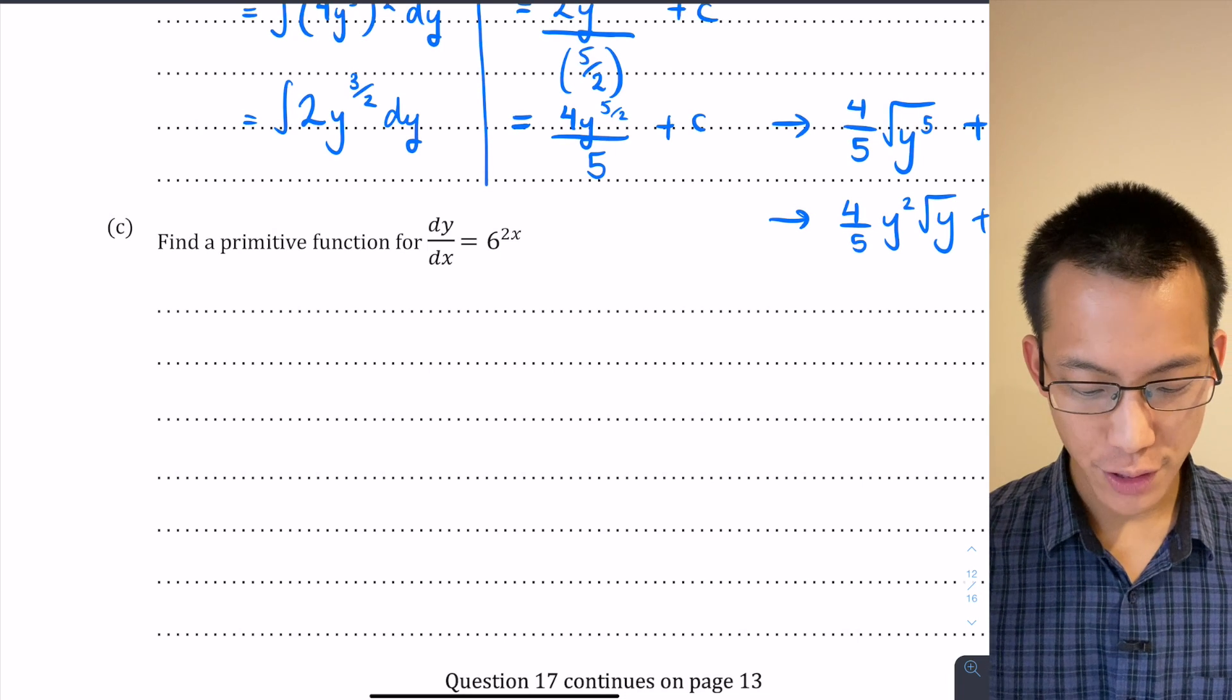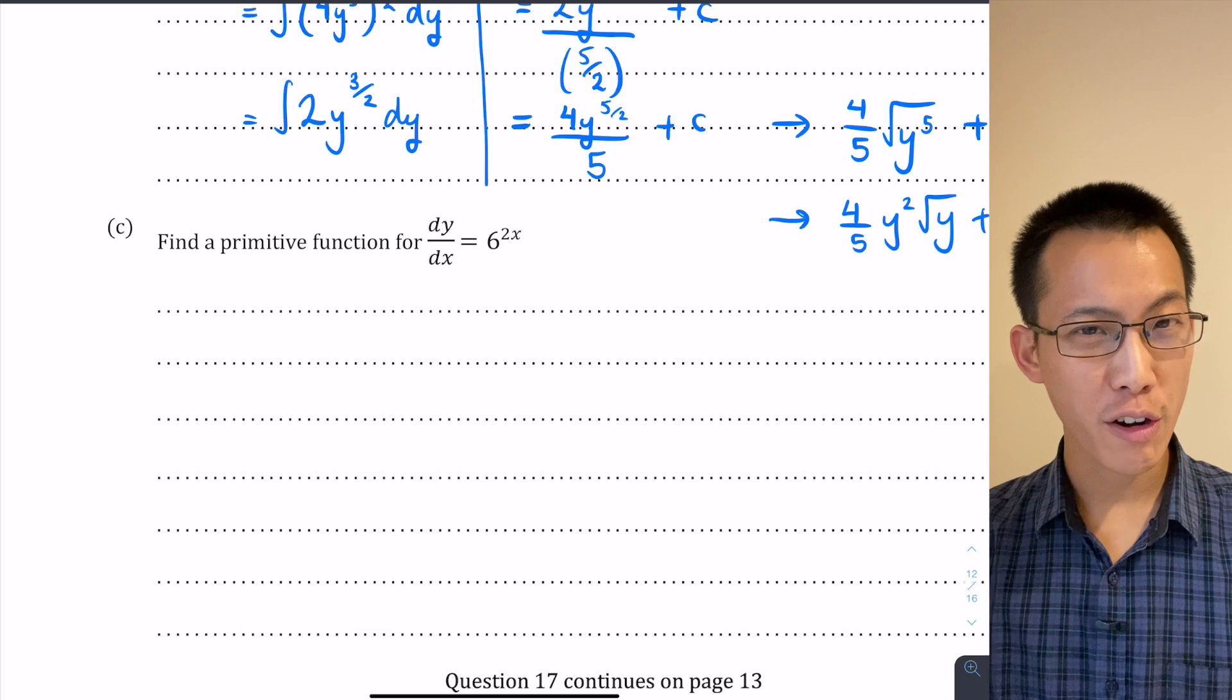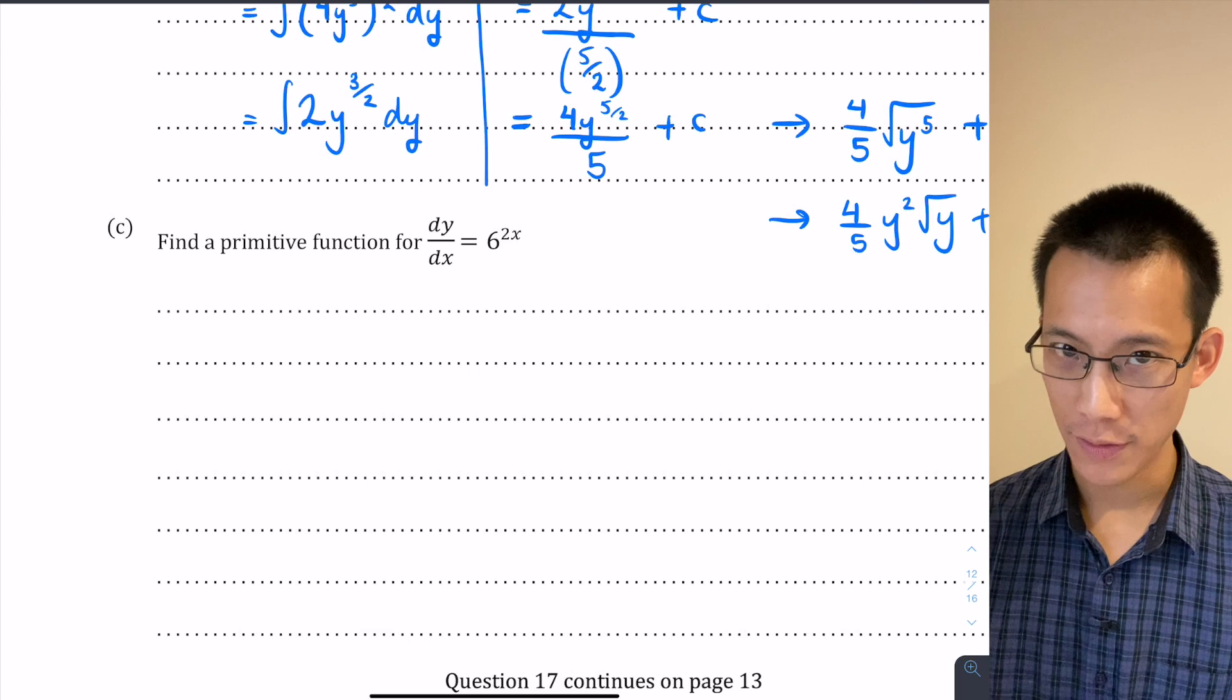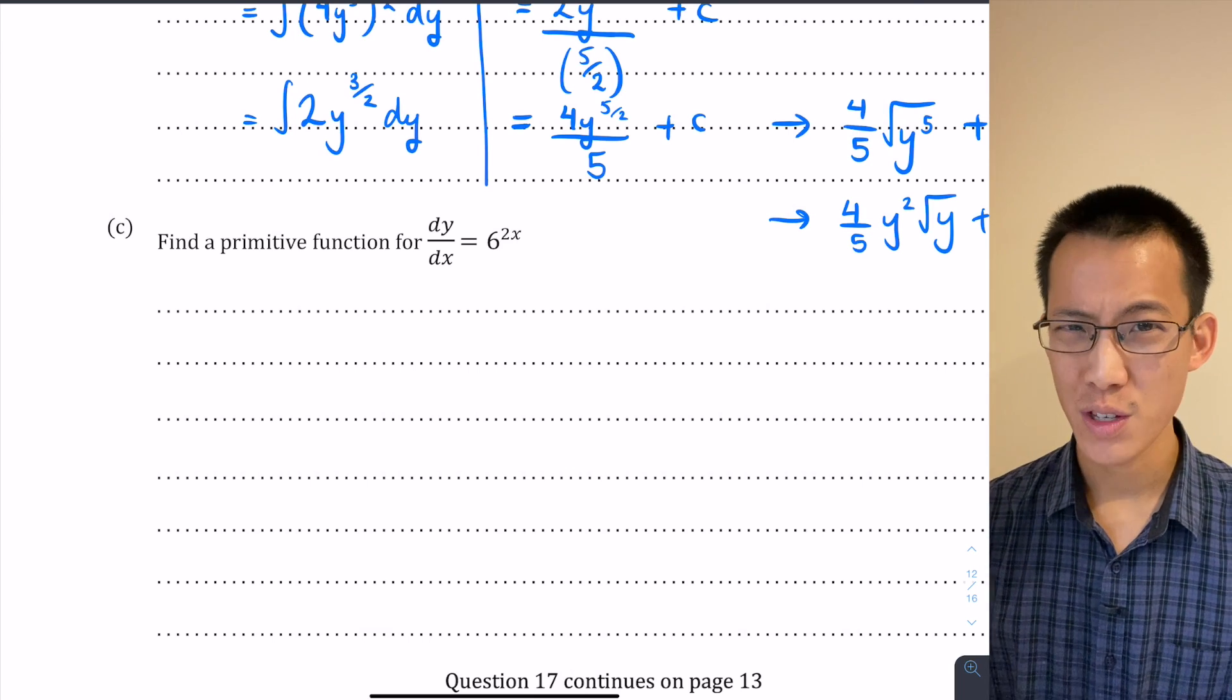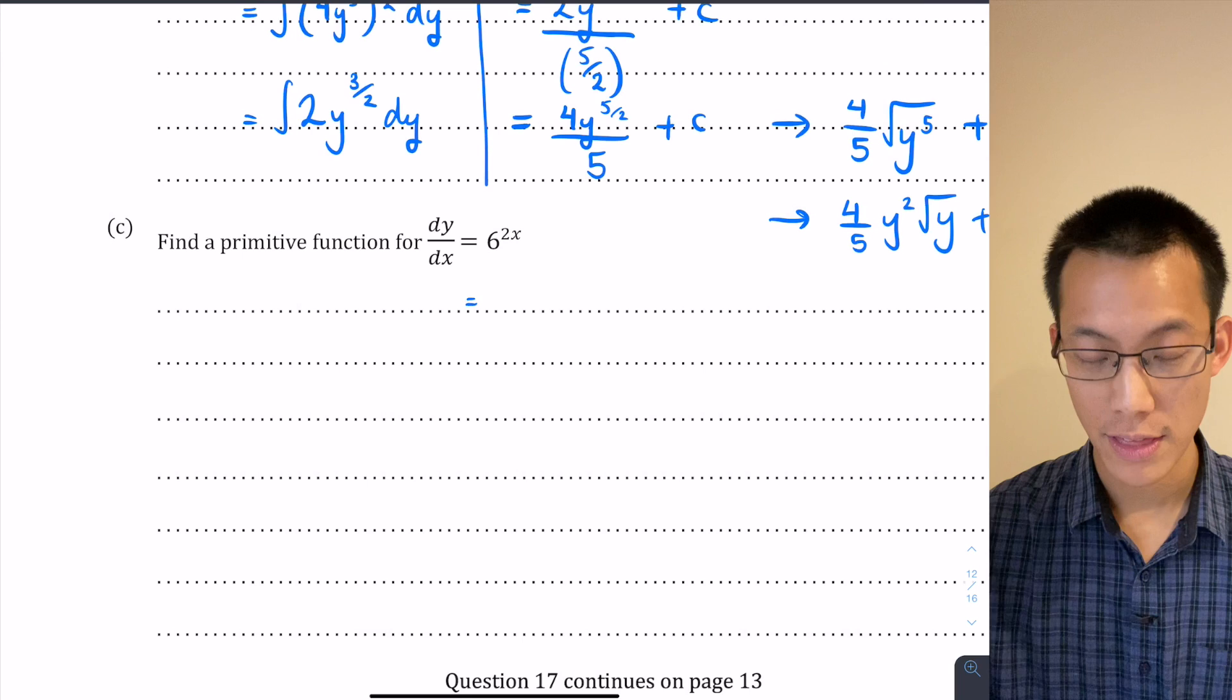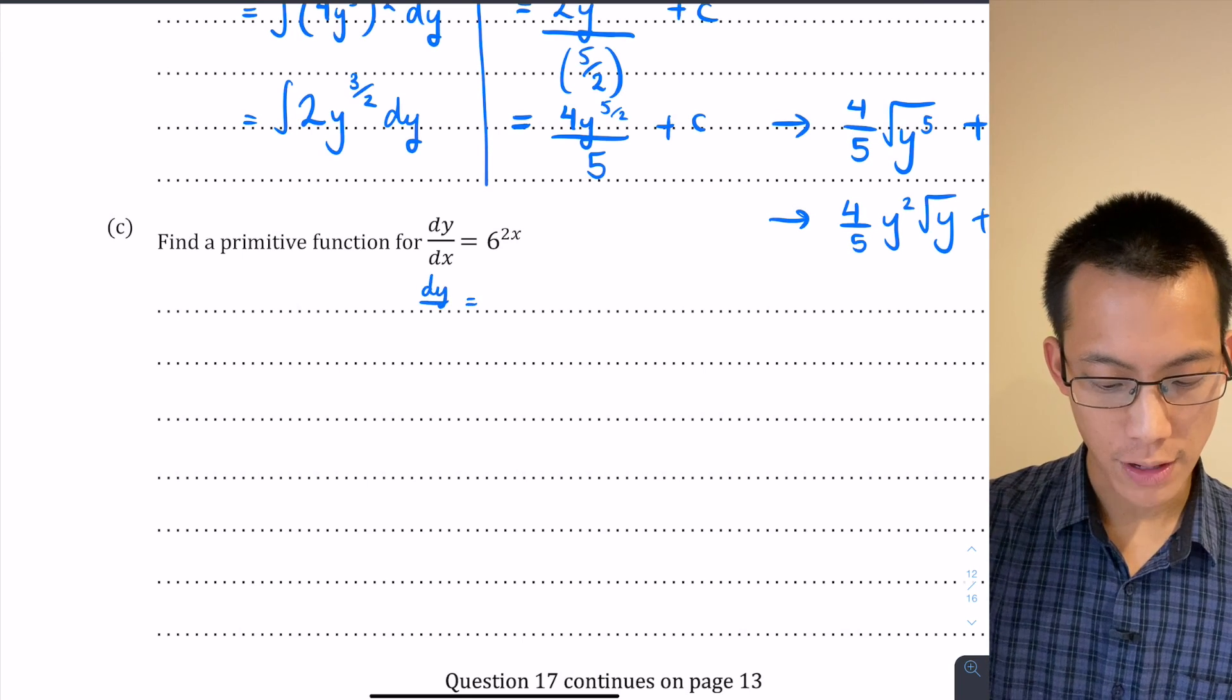Now find a primitive function for dy/dx equals 6 to the power of 2x. Now a lot of people got twisted in turns here because of number one, the base is not e so it's obviously more difficult to deal with, and also you've got that 2x in the power which means you've got to use reverse chain rule as well. So this can be a bit of a mess. Now what I'm going to suggest is the easiest way to have a think about this is to rewrite this 6 to the power of 2x, let's rewrite this derivative.